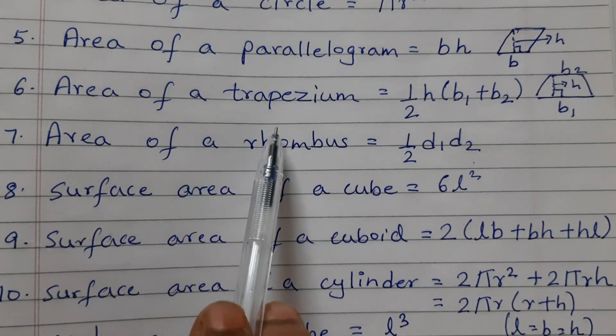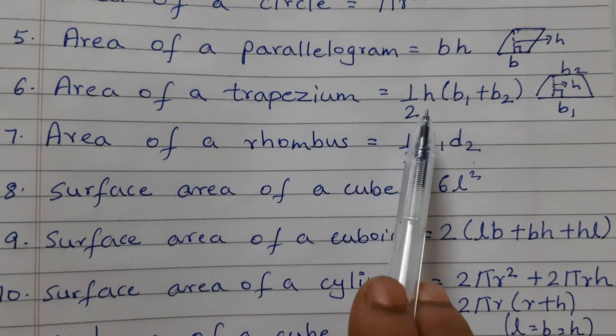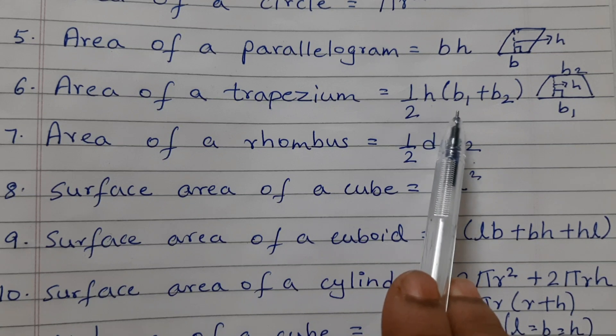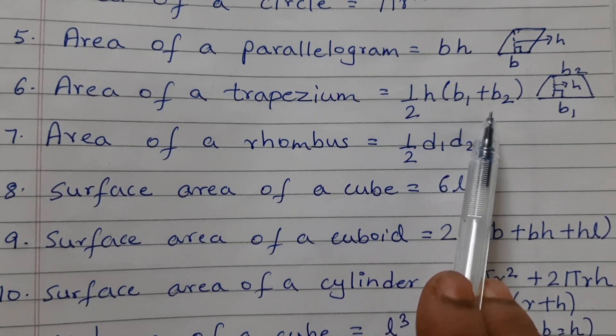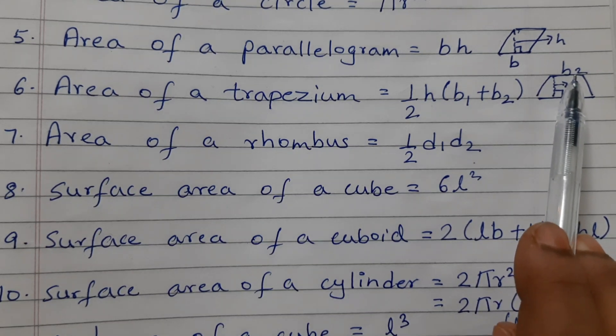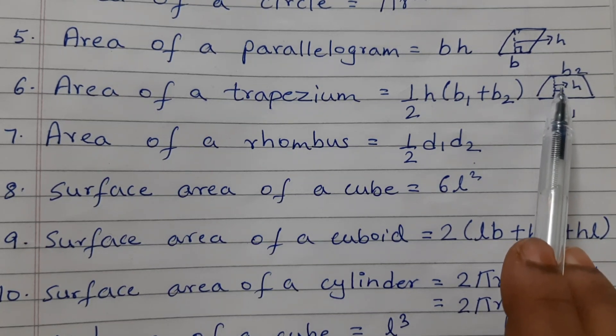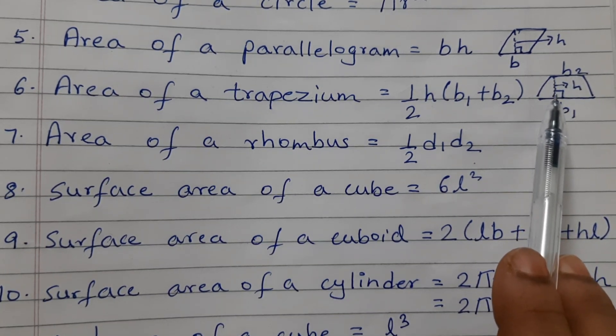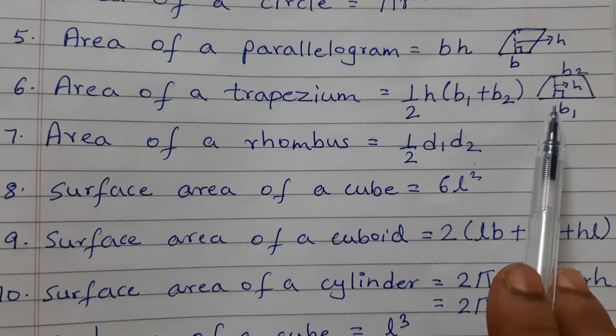Area of a trapezium is equal to half into H into B1 plus B2. So here B1 is base 1, B2 is base 2 and H is the height which is perpendicular from the vertex to the base.